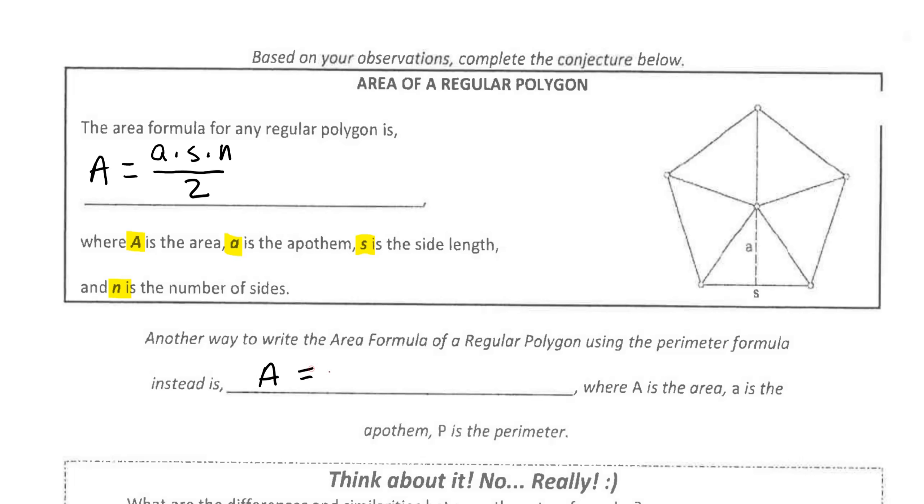So I can replace N times S with the perimeter, in which case our formula would be the area of our regular polygon is Apothem times perimeter over 2. Now, most of the time, we'll just use this formula, ASN over 2. But once in a while, if you're given the perimeter in a problem, then you're going to use this formula.